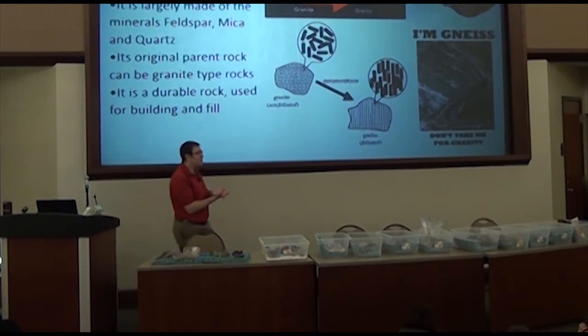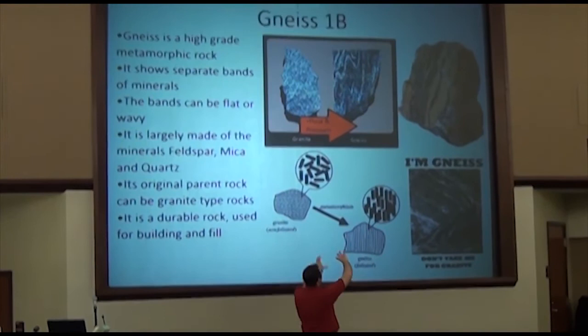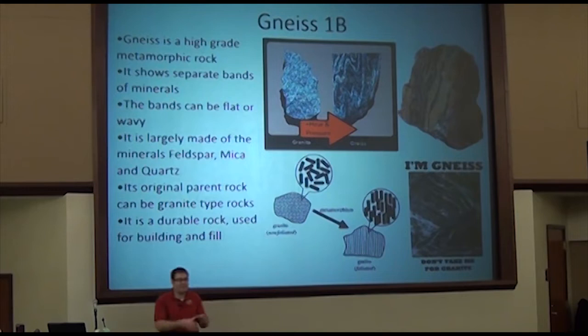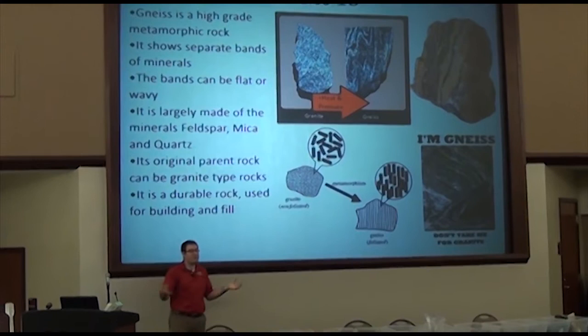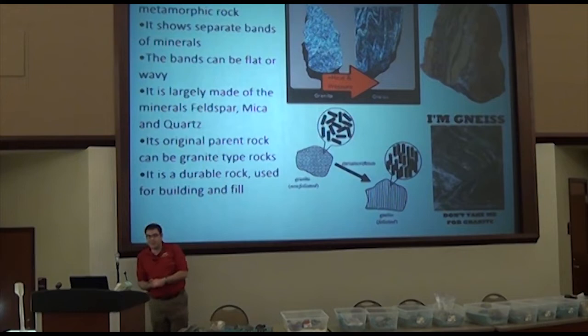Sometimes the bands are really wavy if there was both downward and sideways pressure. These bands crinkle up and become really neat. Sometimes you'll see gneiss used for countertops — it makes really interesting looking ones. It's a really hard rock, used for carvings, fillings, and countertops. It has basically similar minerals to granite and diorite, because that's often the parent rock.